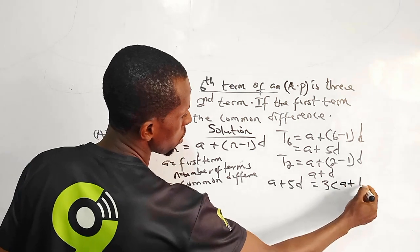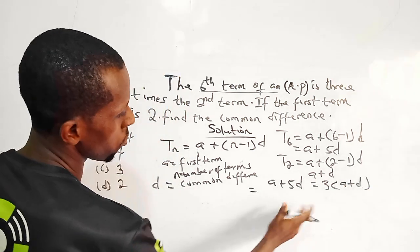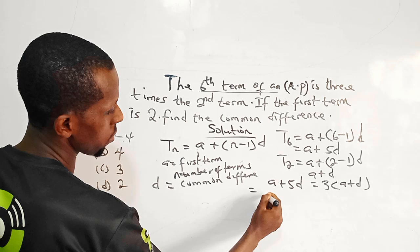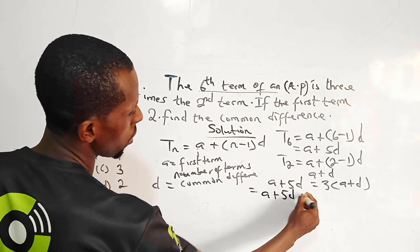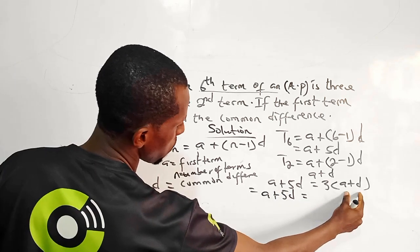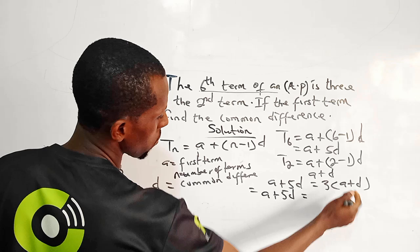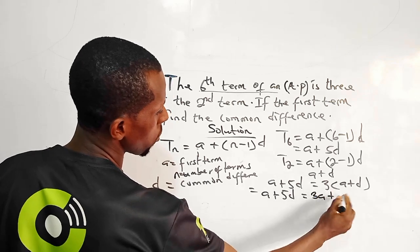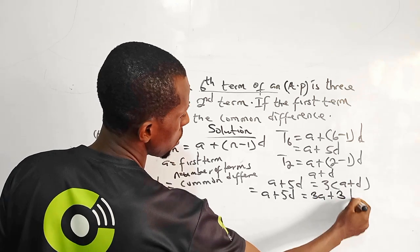According to the question, the second term is a plus d. So I can solve for that and say a plus 5d equals I open up everything in brackets with 3, 3 times a is 3a plus 3 times d is 3d.